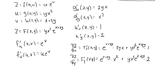You can double-check these two partial derivatives by directly differentiating the composite function with respect to x and with respect to y. If you do that, you will see that the partial derivatives come out to be exactly the same as the ones found from the chain rule.